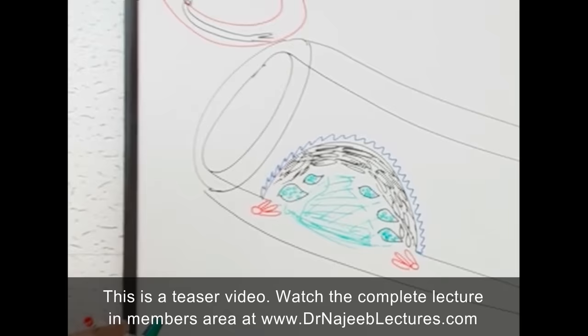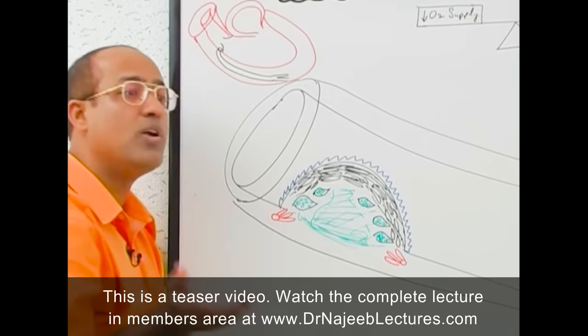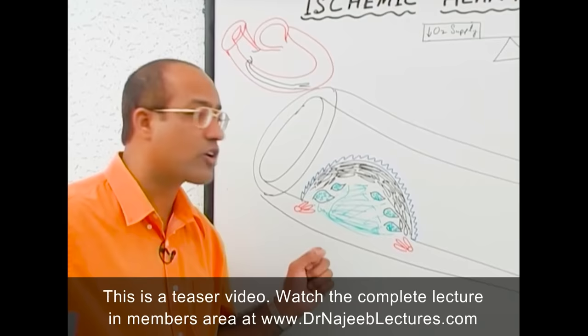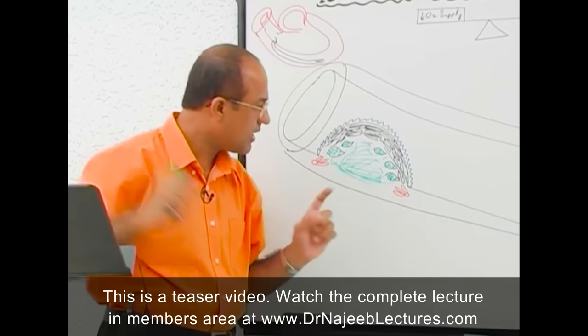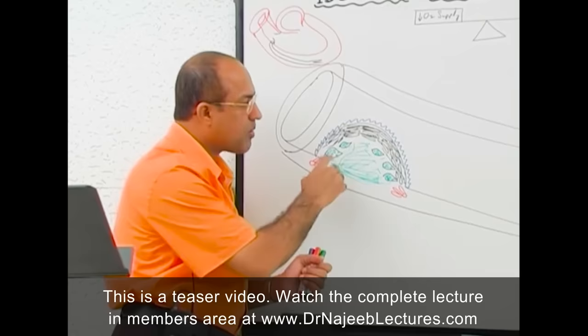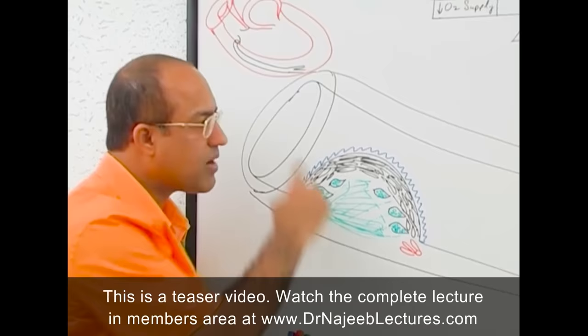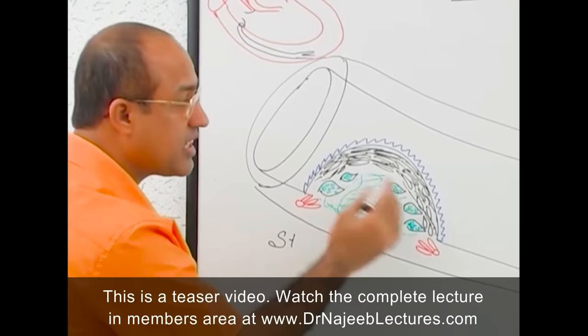Sometimes plaques keep growing over years and years. The precursor lesions — fatty dots and fatty streaks — start forming very early, around the 10th year of age, and almost all adolescents have some fatty streaks in their coronary arteries. Clinically, they start manifesting problems from age 40 and above. This plaque will keep growing and offer an obstruction to blood flow. Such plaques are called stable — they are not rupturing, not fissuring, not undergoing complications — they offer a fixed obstruction to flow.